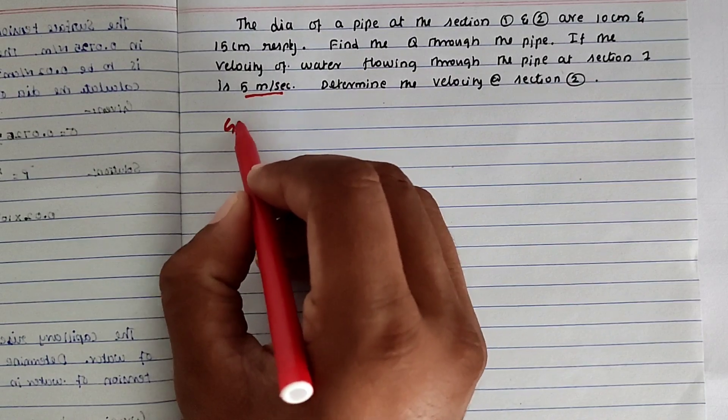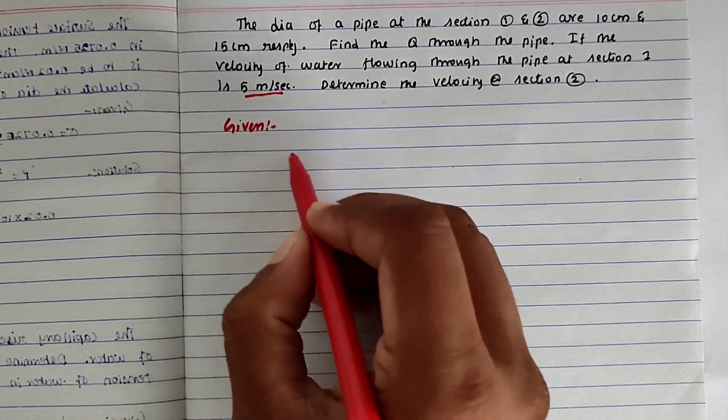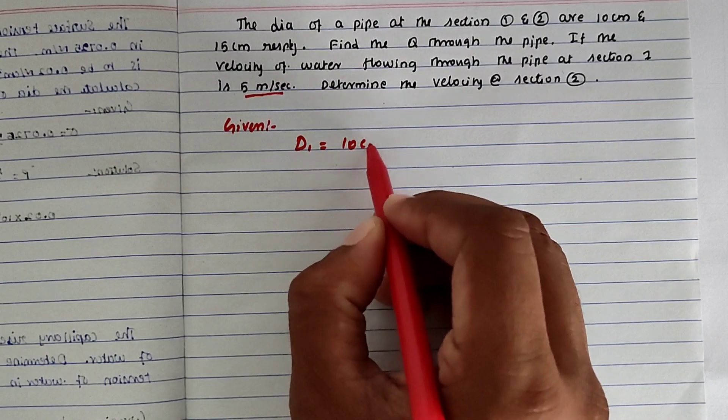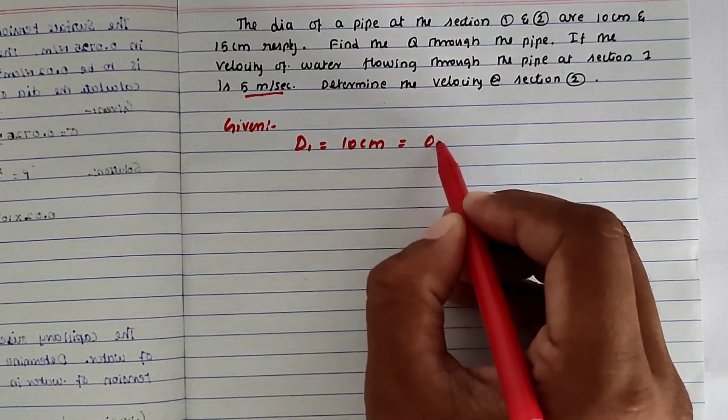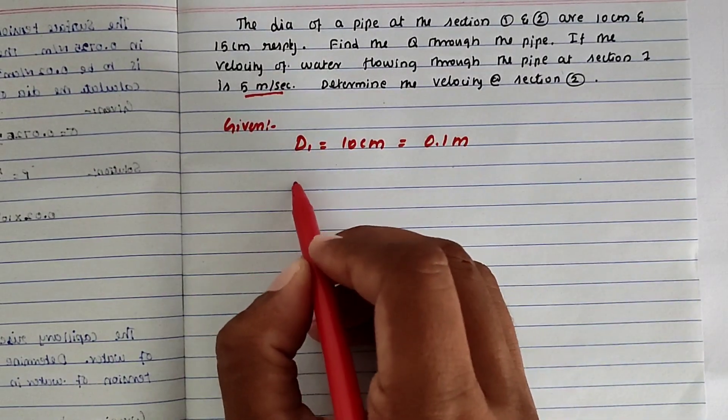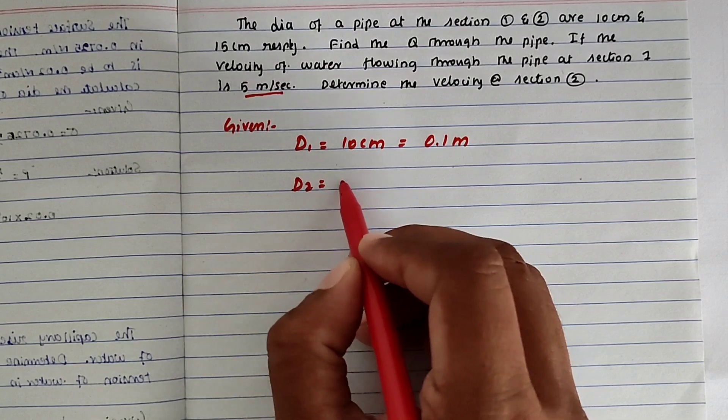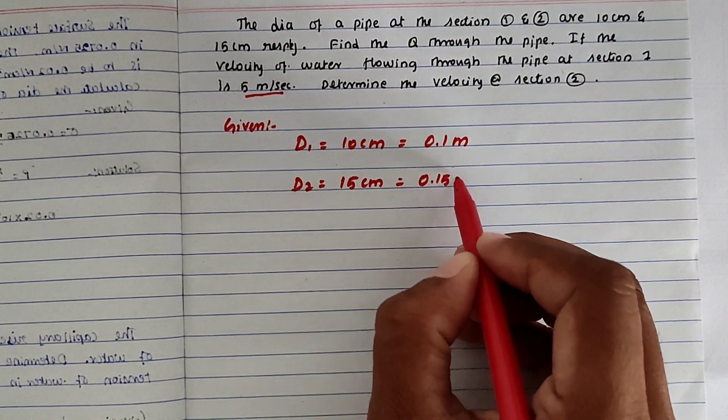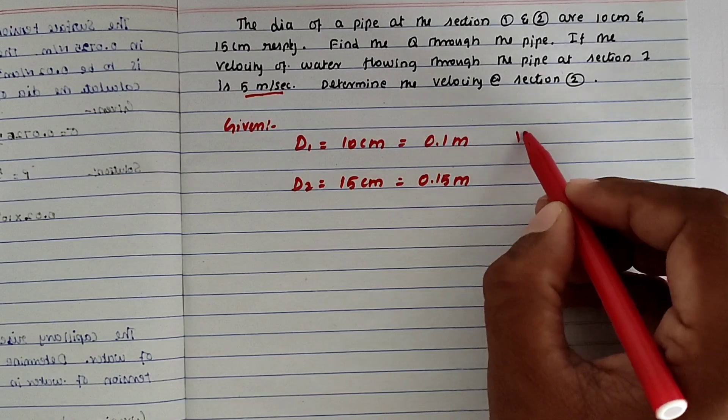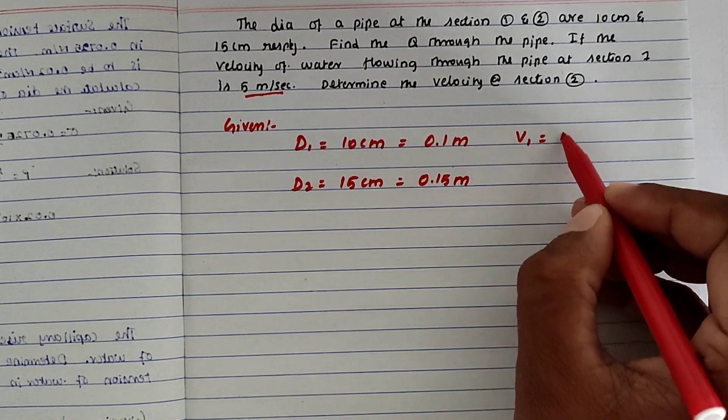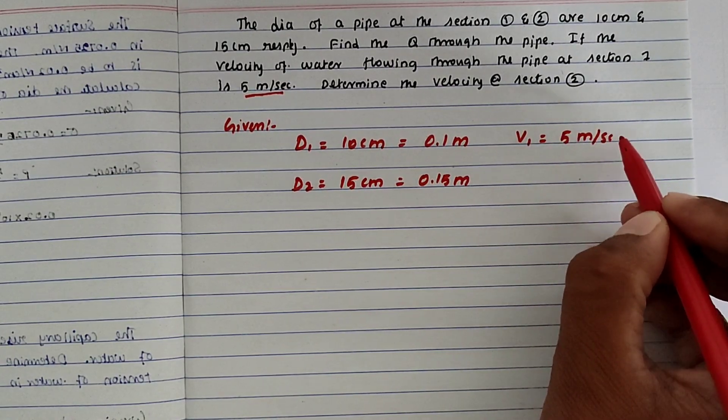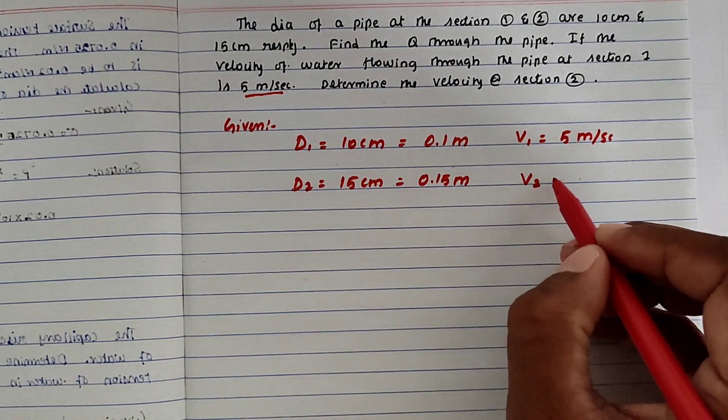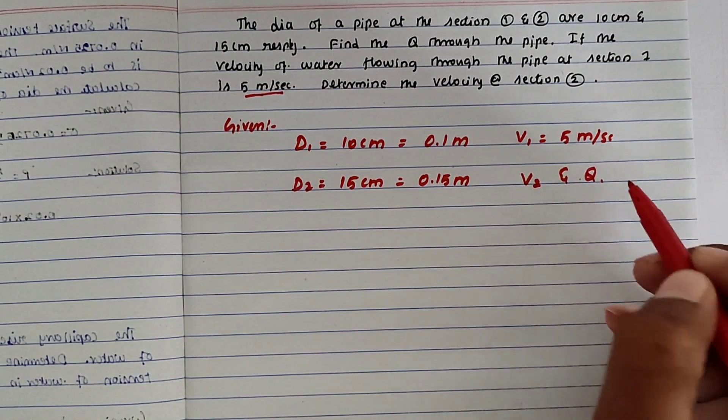Now the given values: diameter 1 is 10 centimeter, that is 0.1 meter. Diameter 2 is 15 centimeter, that is 0.15 meter. Velocity V1 is 5 meter per second. We have to find out V2 and Q.